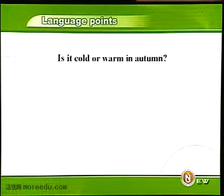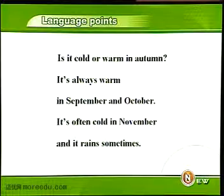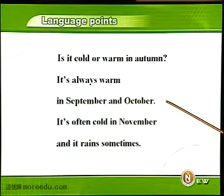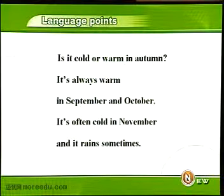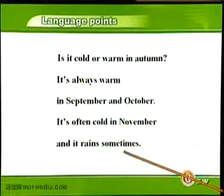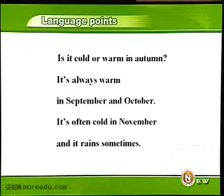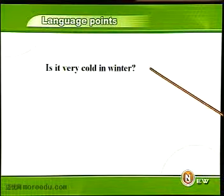那么秋天怎么样呢？Is it cold or warm in autumn? 秋天是冷还是温暖。秋天都包括九月September、十月October和十一月November. It's always warm in September and October. 九月和十月总是很温暖。It's often cold in November, and it rains sometimes. 十一月常常非常的冷，有时候下雨。Sometimes，有时候，它的位置可以放在句尾 it rains sometimes，也可以放在句首 sometimes it rains，还可以放在句中 it sometimes rains。这个副词的位置比较自由。